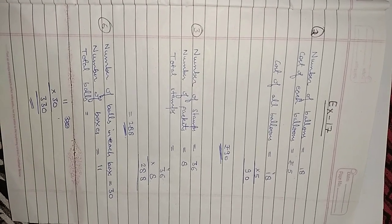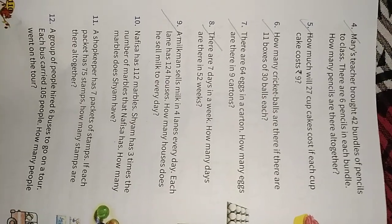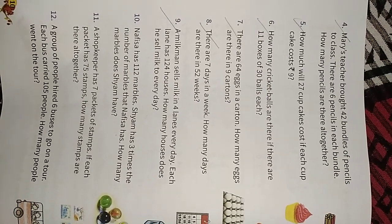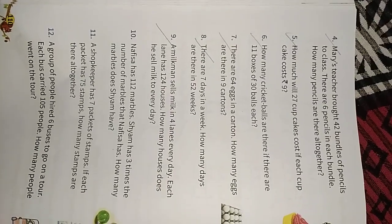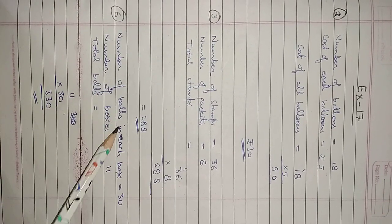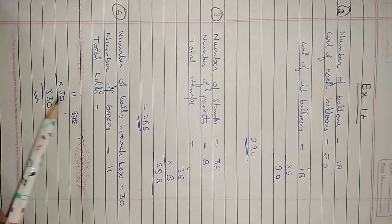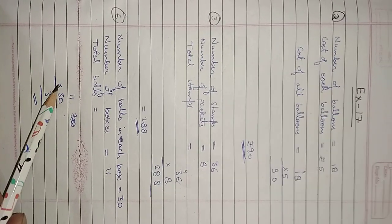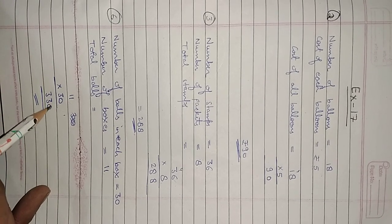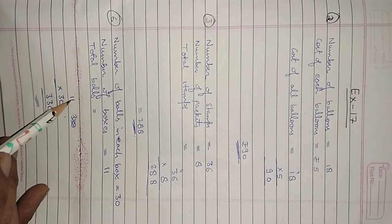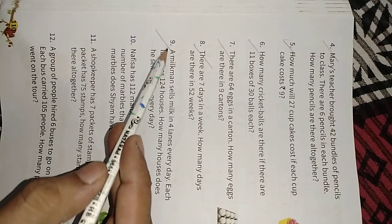Question number 6: How many cricket balls are there if there are 11 boxes of 30 balls each? There are 11 boxes and each box contains 30 balls. Number of balls in each box is 30 and total boxes are 11. Multiply 11 by 30 — just put 0 in the answer and multiply 11 by 3. 3 ones are 3, 3 ones are 3, so the answer is 330. You have to do questions 1 to 9 of this exercise. This chapter is now completed.